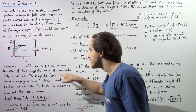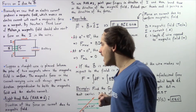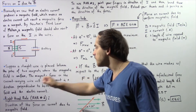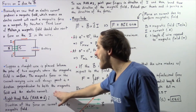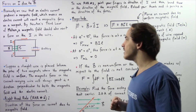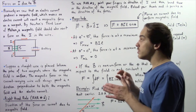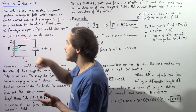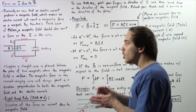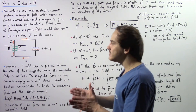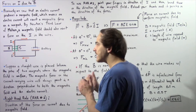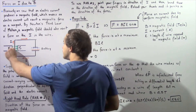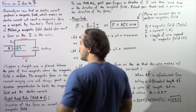The magnetic force on the current-carrying wire will always point in a direction perpendicular to both the magnetic field as well as the electric current. So the magnetic force that acts on our wire will always point at a 90-degree angle with respect to both the direction of the electric current and the direction of our magnetic field.